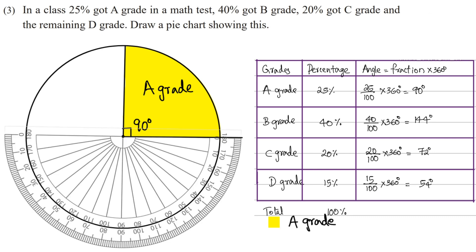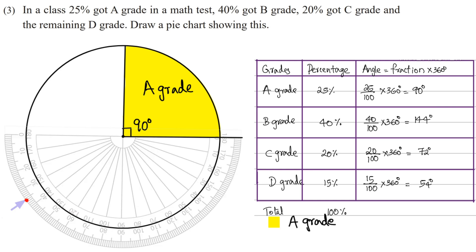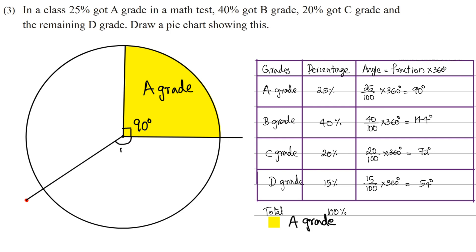This is the B-grade part. The B-grade angle is 144 degrees. So from the A-grade line, we place the protractor center and measure 0, 20, 40, 60, 80, 100, 120, 140, 144 degrees. We mark the point and join to the center of the circle. This is the B-grade part.